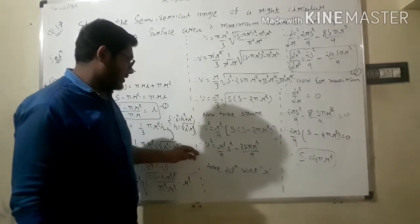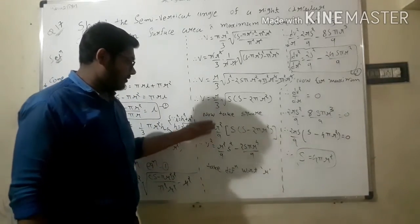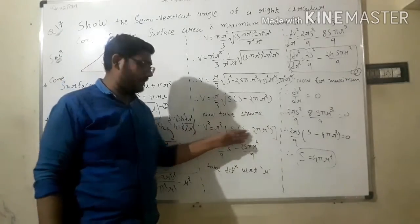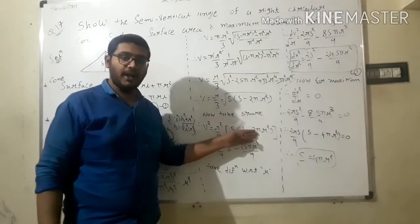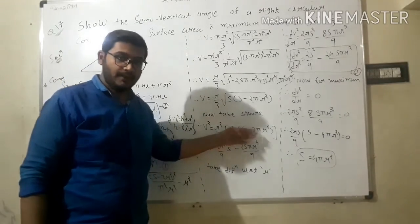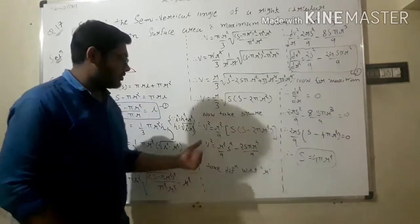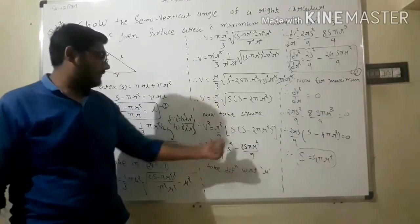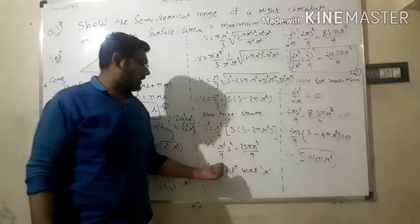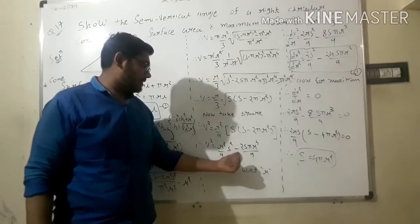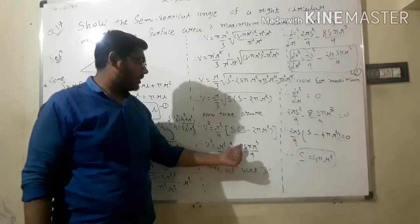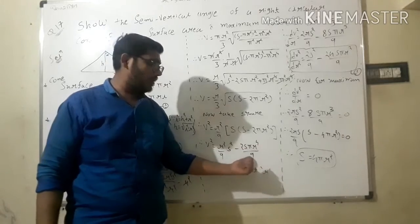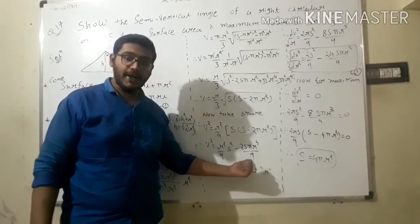Then after multiplying this term with the bracket, we get V² = S²r²/9 - 2Sπr⁴/9. This is our working expression for V² in terms of r, which we will now differentiate to find the maximum volume.